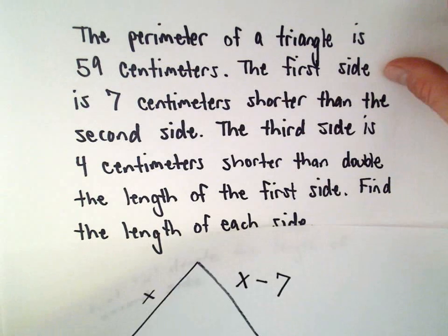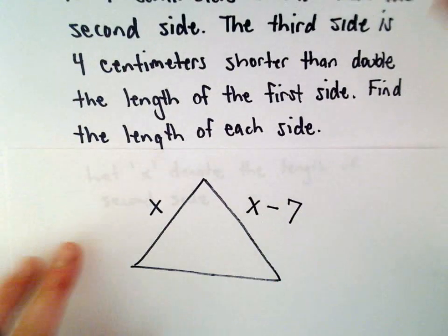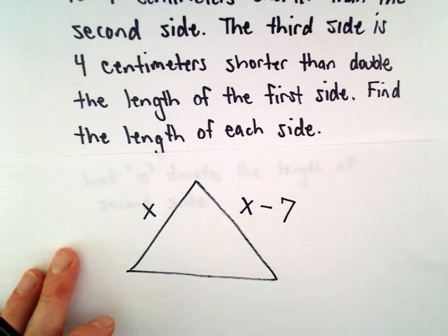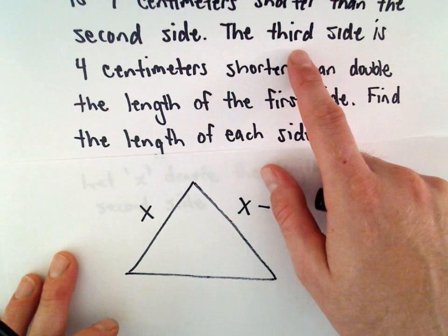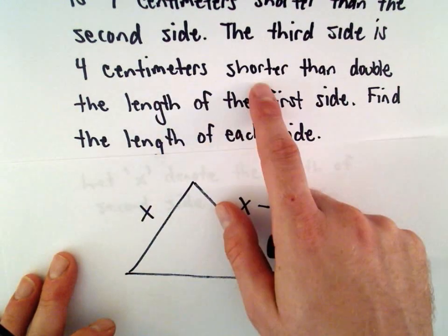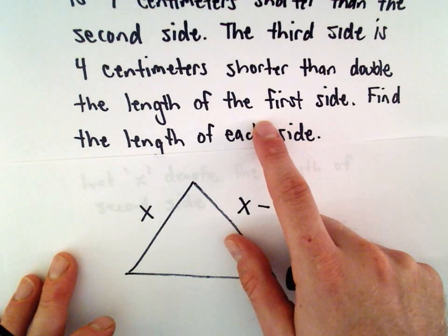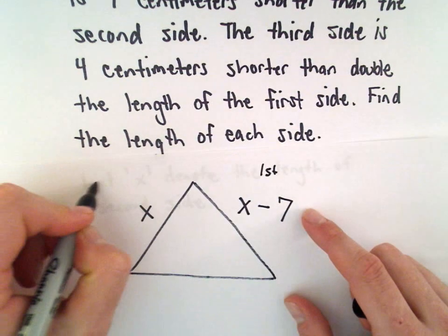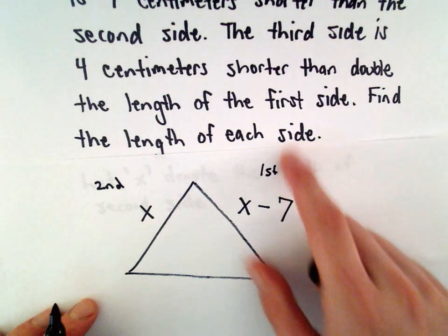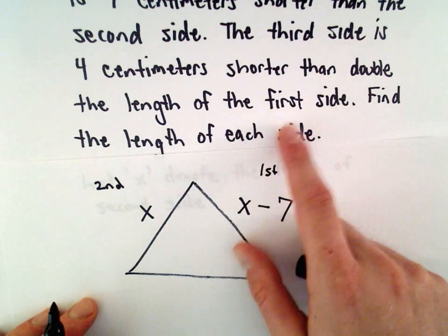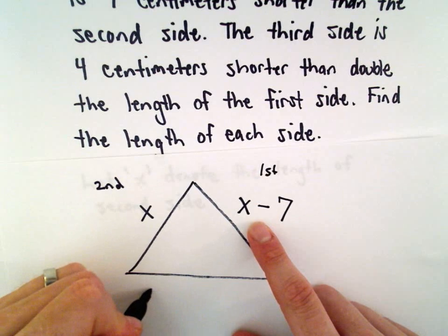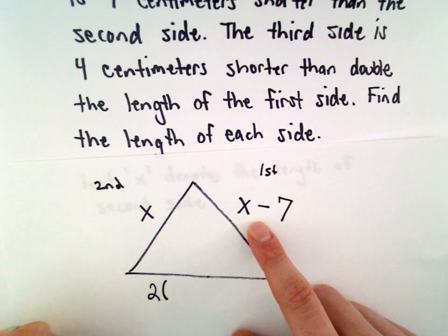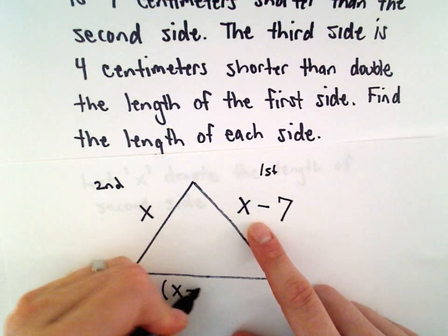The last thing we'll have to do is use the relationship between the third side and the first side. It says the third side is 4 centimeters shorter than double the length of the first side. So, this was the first side, this was the second side. We have to double the length of the first side. So, that means we would take 2 times x minus 7.